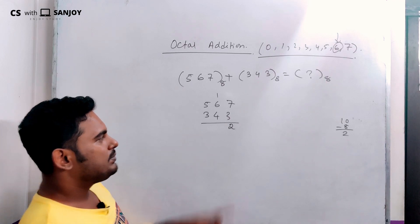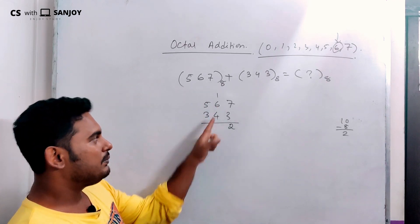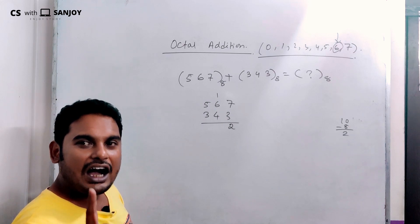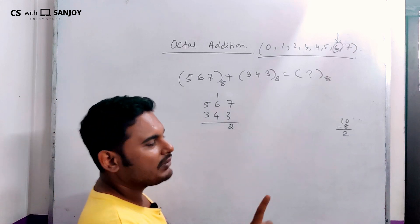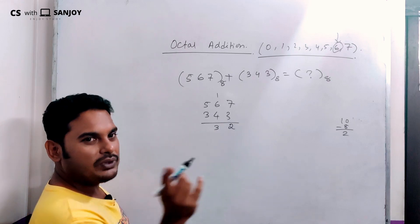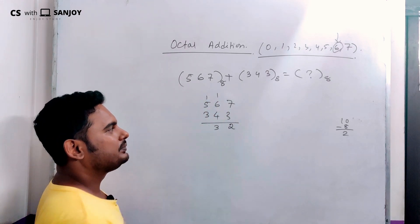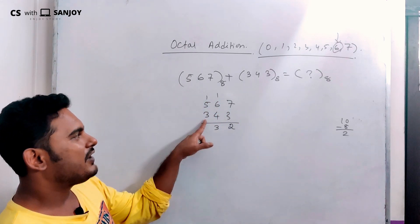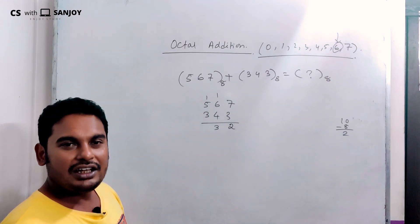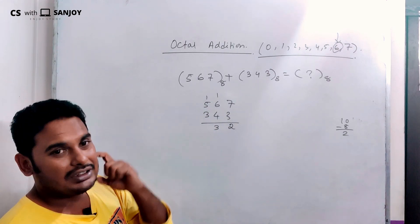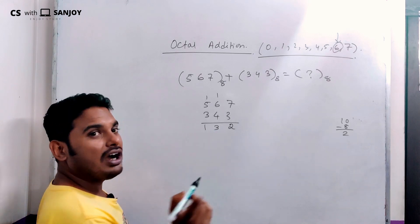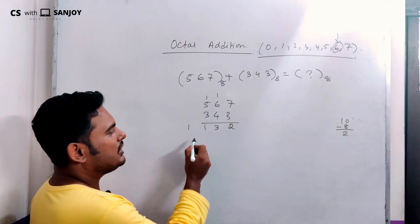Next column: 6 plus 4 is 10, plus carry 1 is 11. 11 divided by 8 gives quotient 1 and remainder 3. Sum digit is 3, carry is 1. Next column: 5 plus 3 is 8, plus carry 1 is 9. 9 divided by 8 gives quotient 1 and remainder 1. Sum digit is 1, carry is 1.